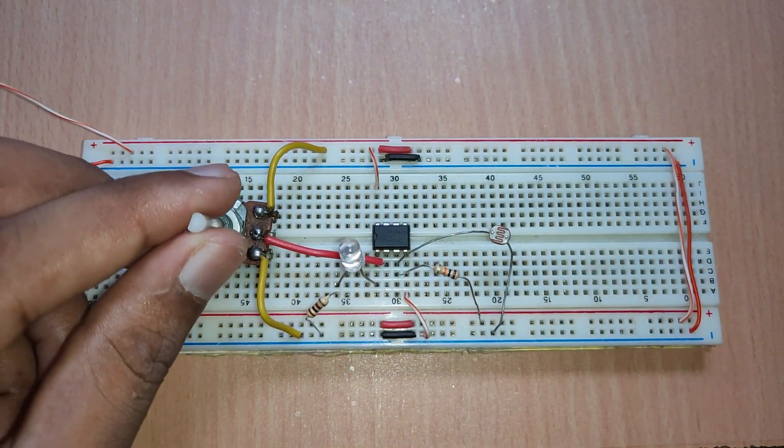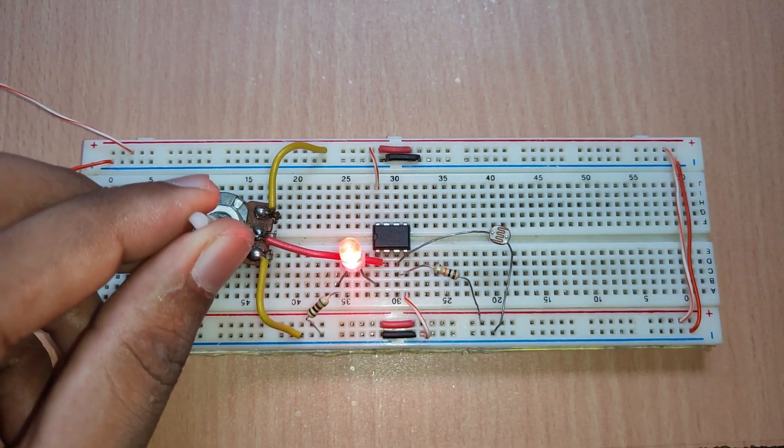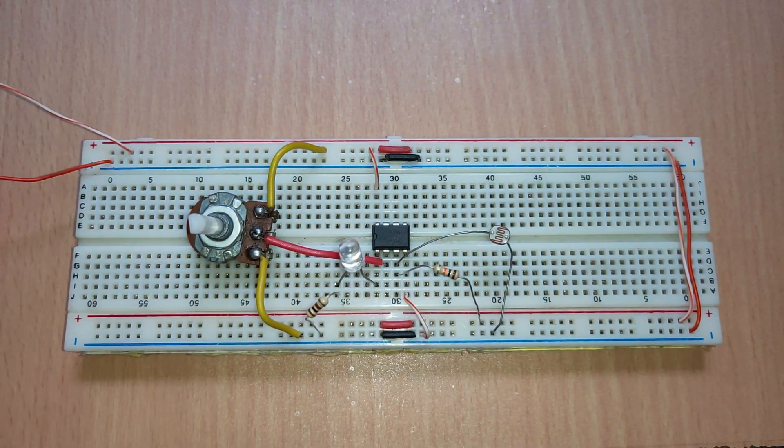The sensitivity of the circuit can be changed by varying the potentiometer, which in turn varies the reference voltage at the inverting terminal.